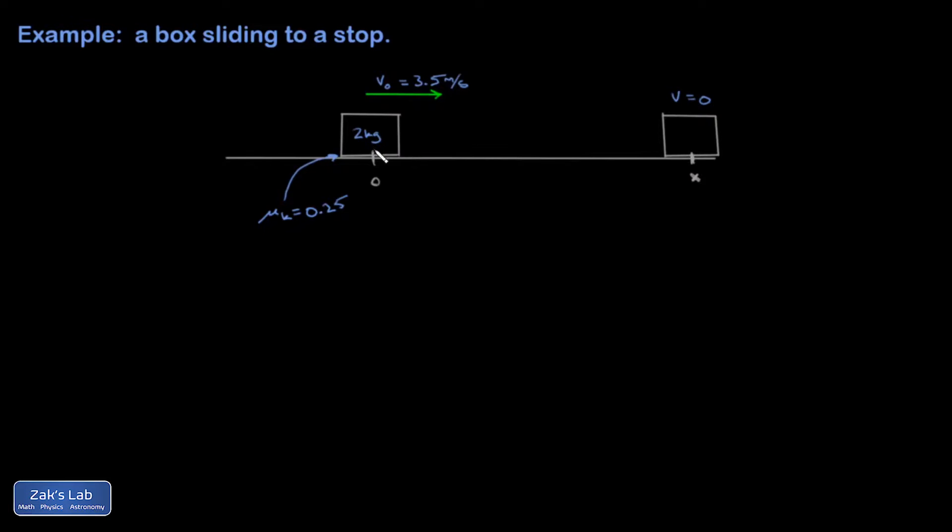So we start putting forces in. There's a force of gravity pointing downward, a normal force pointing up, and there's no motion in the vertical direction.